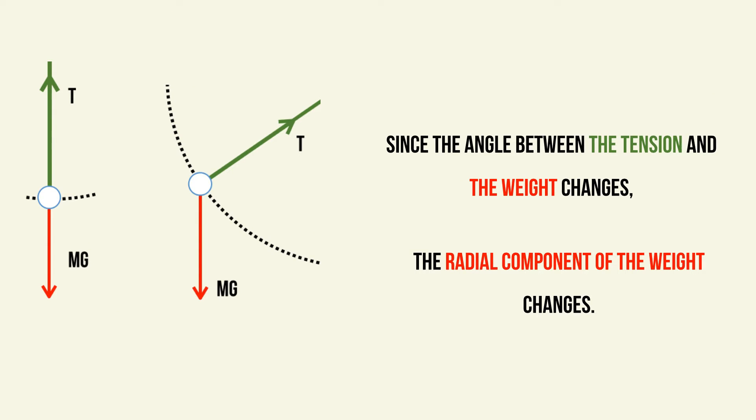However, in vertical circular motion, the angle between the tension and the weight changes. Therefore, when we're resolving radially for the radial component of the weight, that radial component will change.